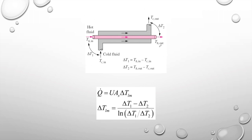You have to remember that delta T1 is T_h,in minus T_c,out — do not subtract T_c,in from T_c,out, that is totally wrong. Delta T2 is T_h,out minus T_c,out. Actually, delta T1 is T_h,in minus T_c,in, and delta T2 is T_h,out minus T_c,out. Then to determine the rate of heat transfer, substitute into the equation: Q̇ = U · As · ΔT_lm.